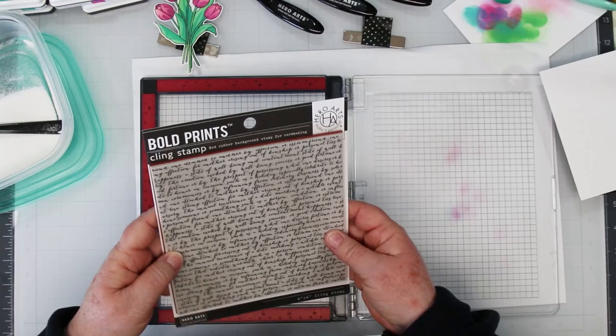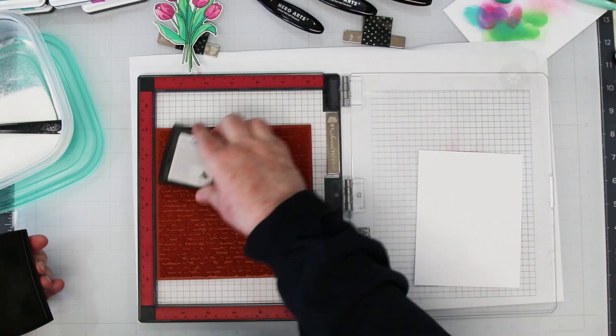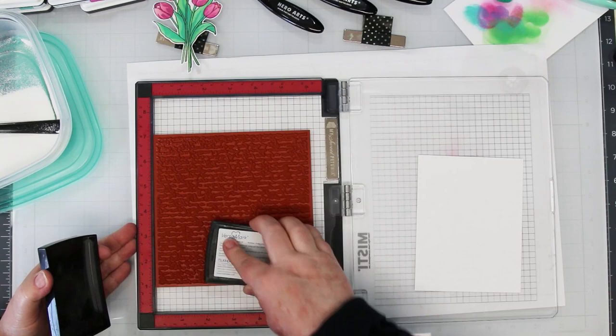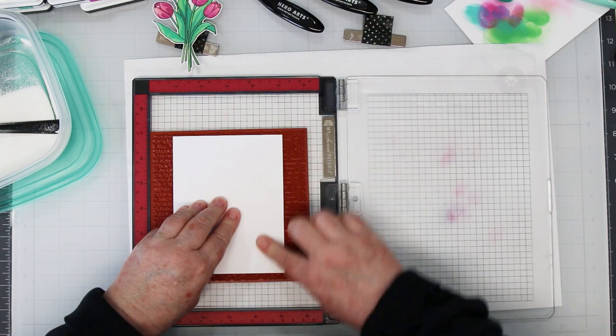For the background I'm going to do an emboss resist technique. I'm starting by stamping the script bold print background, also from Hero Arts, and it's a rubber stamp. You have to take the black mat out of your Misti so that this nice thick stamp will fit. I'm inking it up really well with Versamark ink and then I'm going to lay my background piece right over top of it and give it a good rub. That's going to transfer all that cool writing onto my card front.